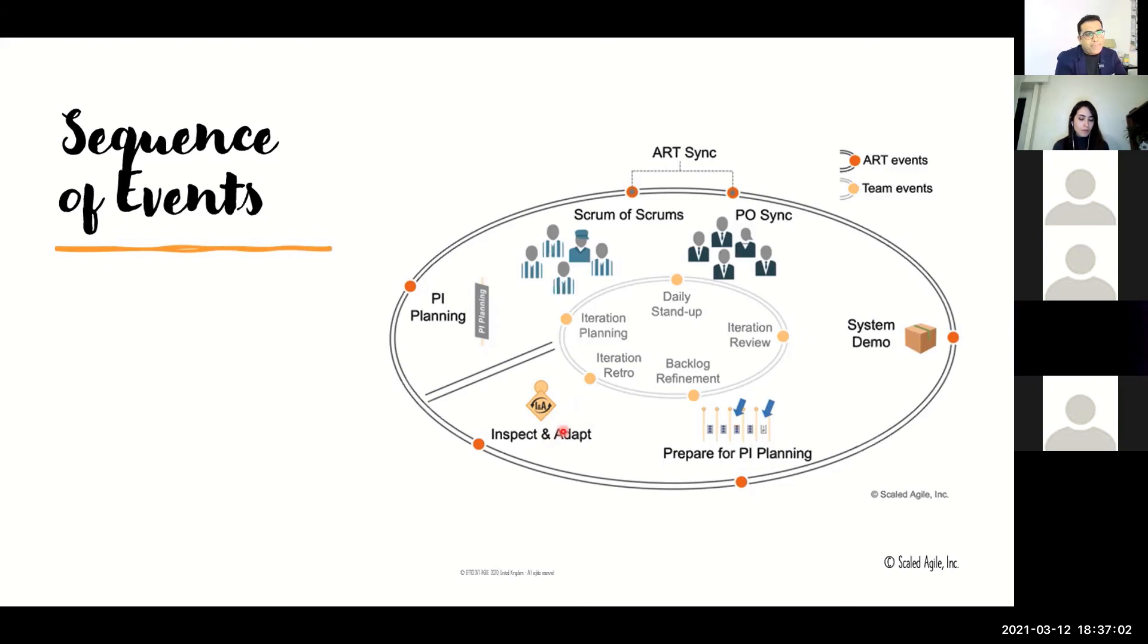What you see within the inner circle is what a team does: iteration planning like sprint planning, daily stand-up or daily scrum, iteration review which is your sprint review, iteration retro or retrospective, and backlog refinement. These are team level activities. You could also run backlog refinement sessions at the train level to refine your features on a weekly or bi-weekly basis depending on how mature your backlog is.